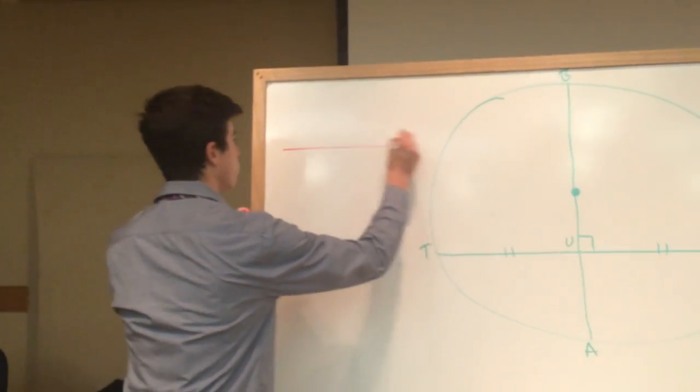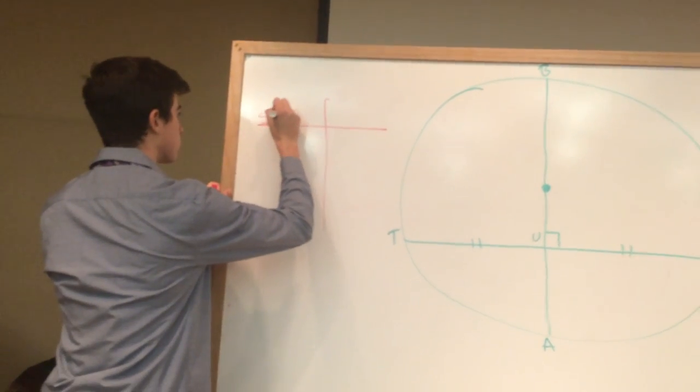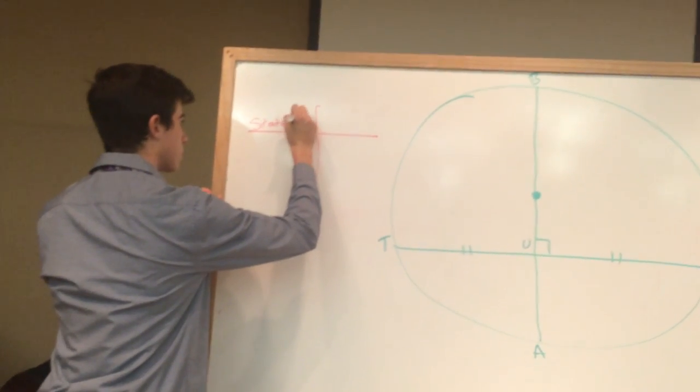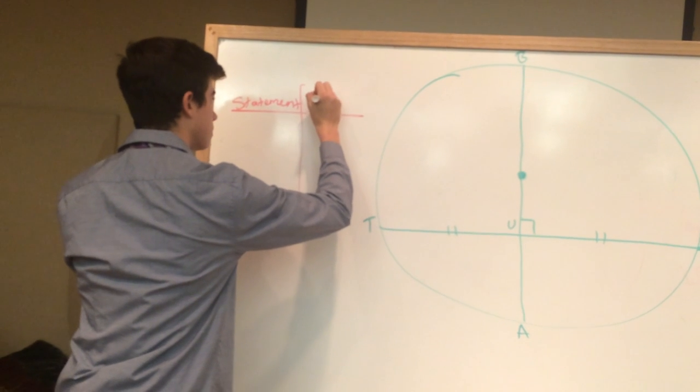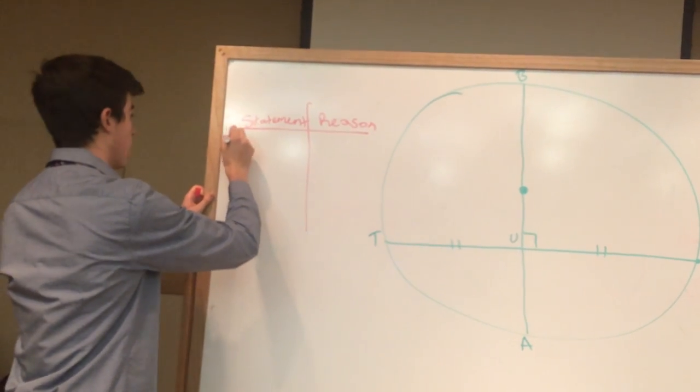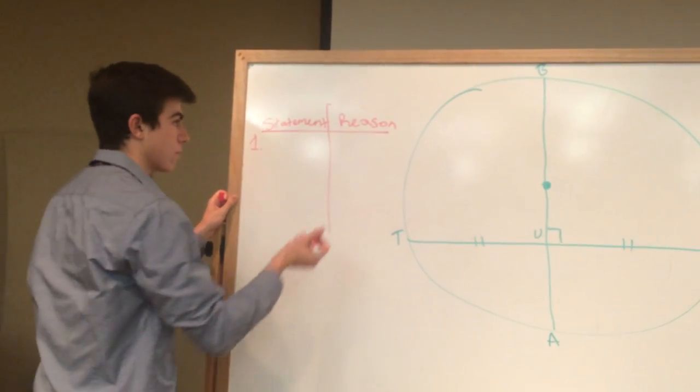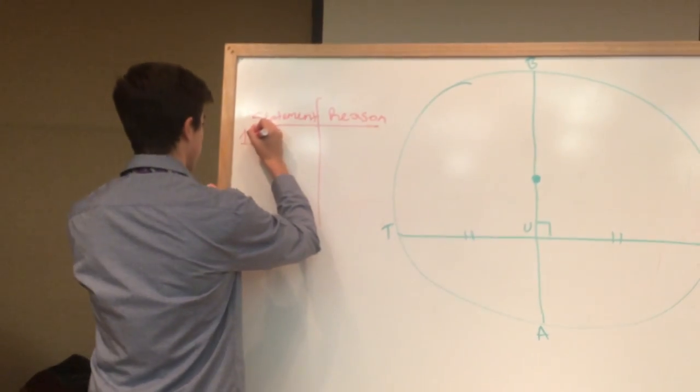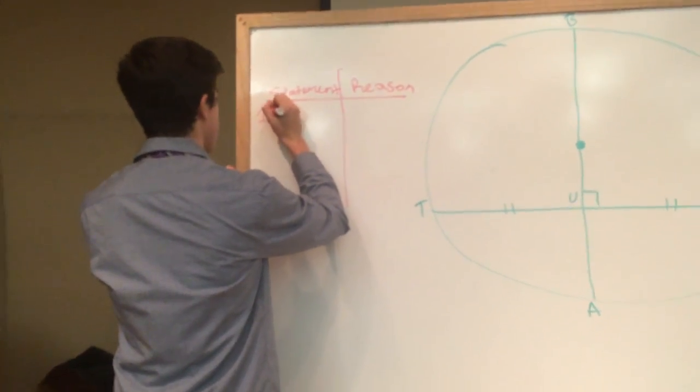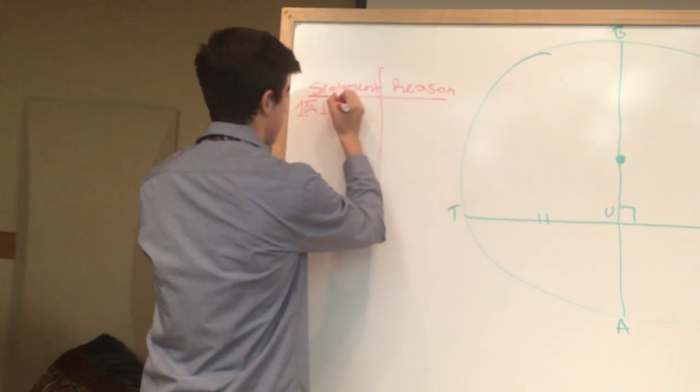Let's start off with our two-column proof. We have our statement and our reason. The first thing we write down is our givens because they're given to us. We know that line segment BA is perpendicular to line segment TV,